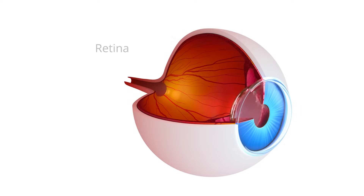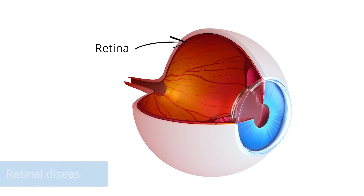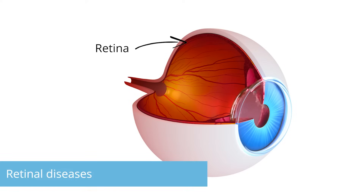The retina is a multi-layered nerve tissue which lines the posterior part of the eye. In addition to vision, it is responsible for recognizing light and dark as well as movements. Diseases can affect the retina or the central retina.